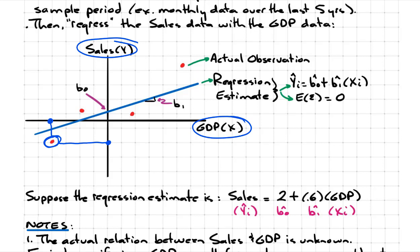The more dots or more observations we have, the clearer the picture that emerges between the relation between sales and GDP. Once we have all these observations plotted out, the next task is to draw a line that best fits through the data. That's what that blue line is — that's your regression line, the line of best fit.